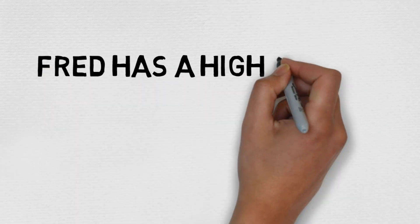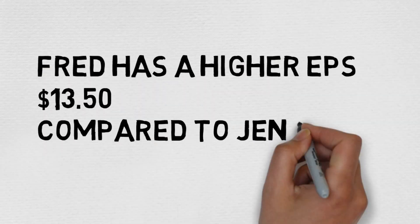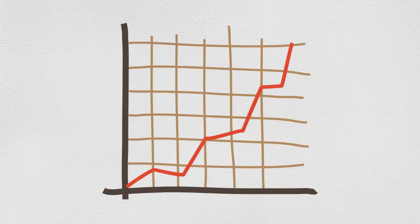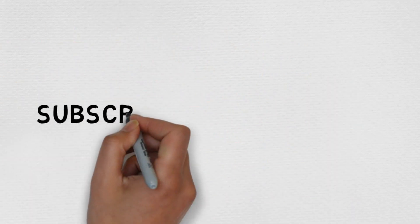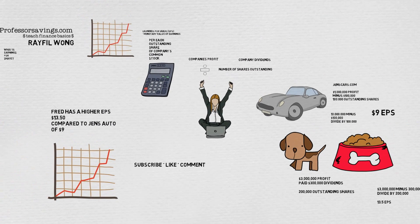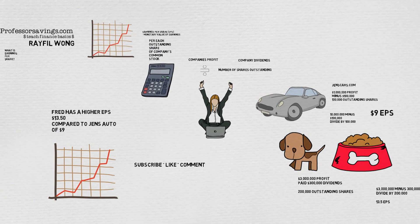So fredfood.com has a higher EPS of $13.50 compared to Gens auto at $9. This helps you compare two companies in different sectors and compare ratios. That's it for now — we're keeping it simple. If you'd like to learn more about finance basics, subscribe, comment, and like our channel now.